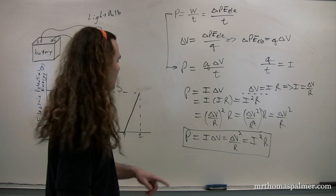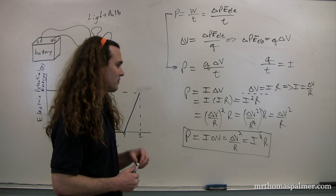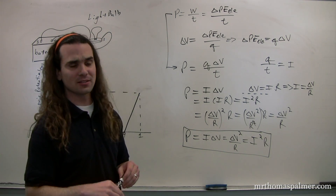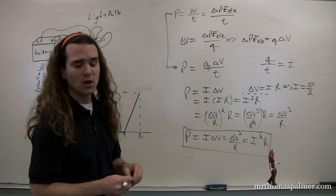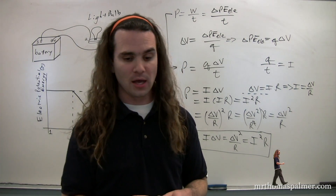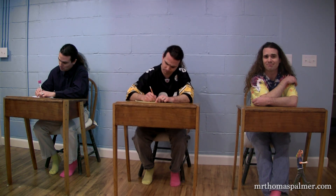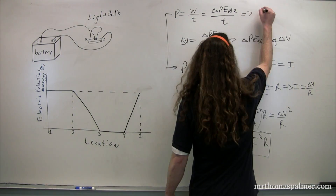Power is the rate at which electric potential energy is converted to heat, light, and sound. The dimensions for electric power: power is in joules per second, or watts.